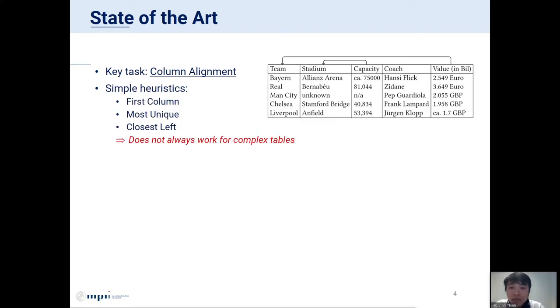About the prior work, many papers adopt very simple heuristics for column alignment. For example, the first column heuristic links all quantity columns to the first column of the table. The most unique heuristic links to the column with the most unique values. The closest left heuristic links to the closest entity column on the left. However, these heuristics do not always work for complex tables. In this table, the first two heuristics fail to identify the link between capacity and stadium. The closest left heuristic can identify this link, however, it incorrectly links the column value to code.